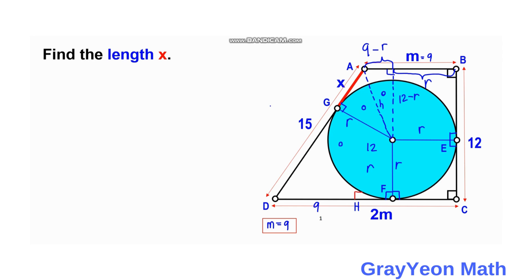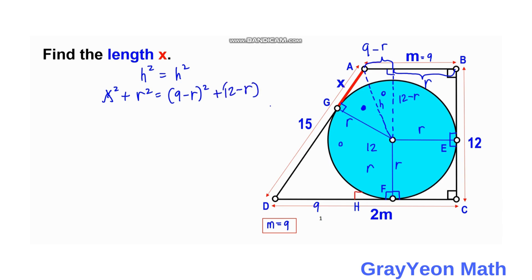The common hypotenuse is H. Setting the two expressions for H² equal: X² + R² = (9 − R)² + (12 − R)².